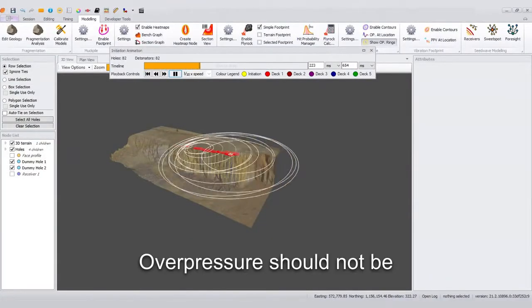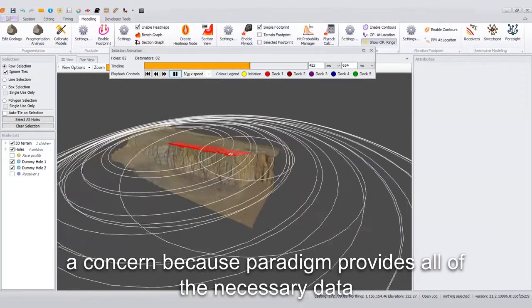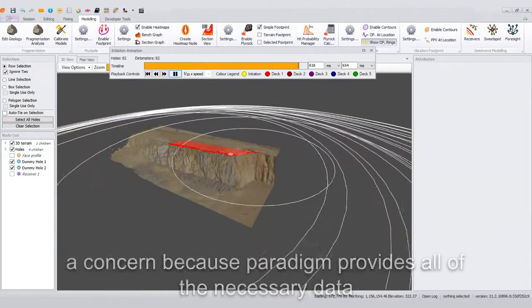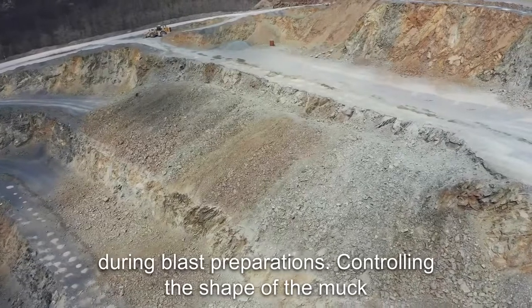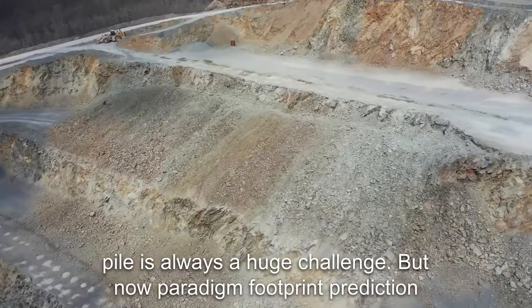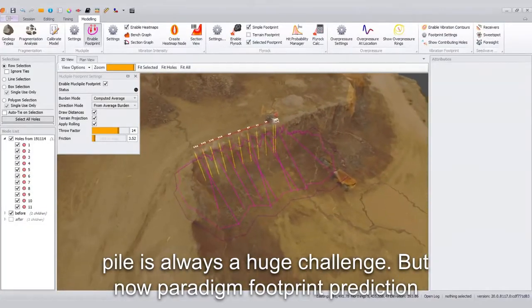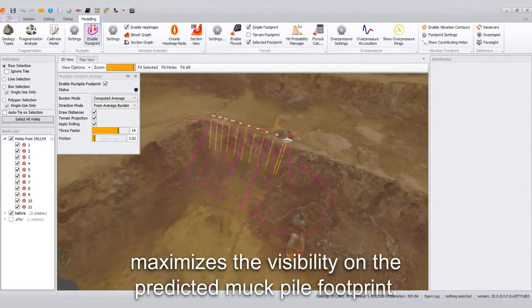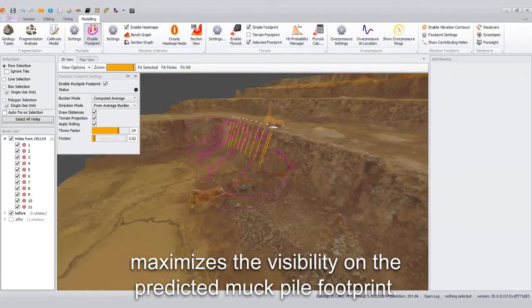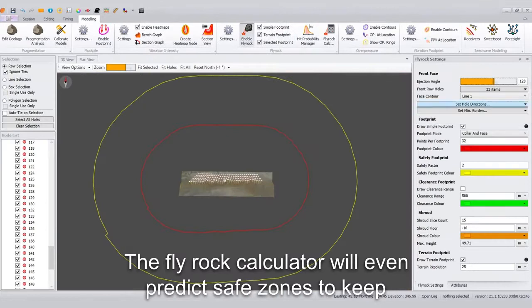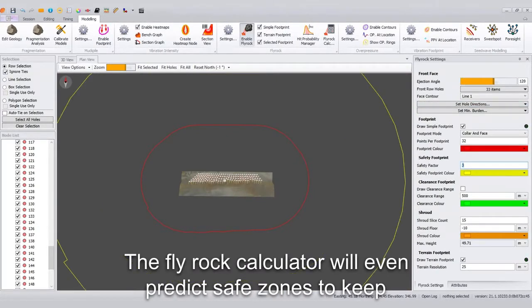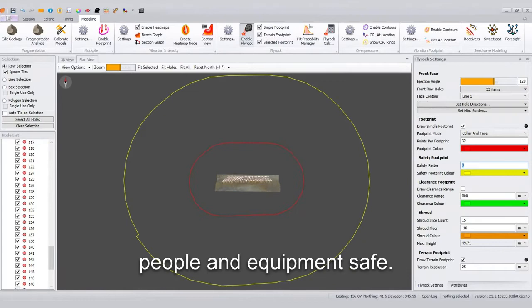Overpressure should not be a concern because Paradyn provides all of the necessary data during blast preparation. Controlling the shape of the muck pile is always a huge challenge. But now, Paradyn footprint prediction maximizes the visibility on the predicted muck pile footprint. The fly rock calculator will even predict safe zones to keep people and equipment safe.